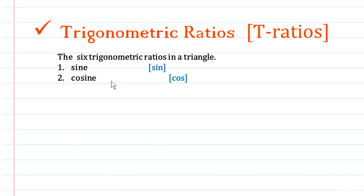The second t-ratio is cosine and it is abbreviated as cos. The third trigonometric ratio is tangent and it is read as tan.